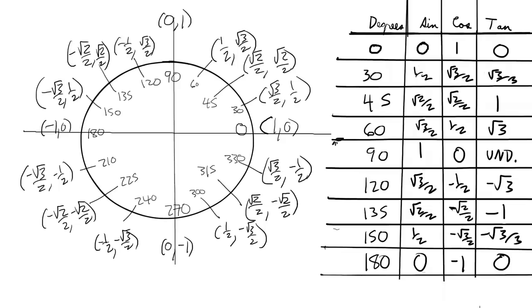The cosine of 120 degrees is negative 1/2. The cosine of 135 degrees is negative √2 over 2. The cosine of 150 degrees is negative √3 over 2. And the cosine of 180 degrees is negative 1.